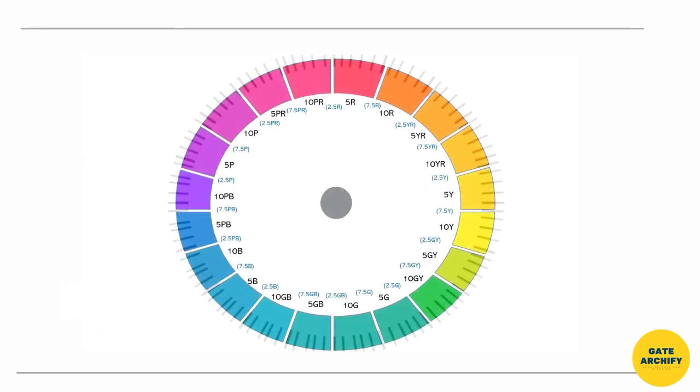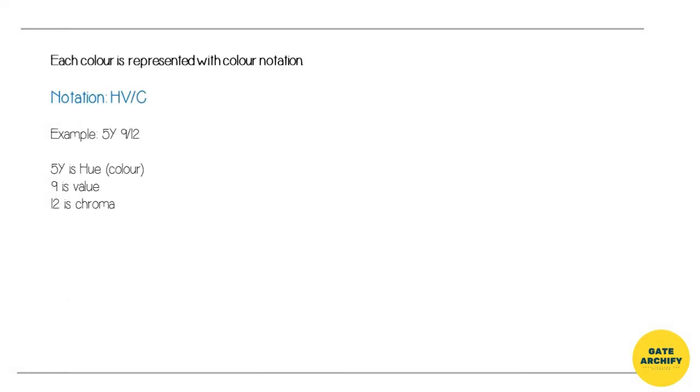Color charts typically specify 40 hues with increments of 2.5. Each color is represented with the notation H V/C. For example, 5Y 9/12 means 5Y is the hue, 9 is the value, and 12 is the chroma.